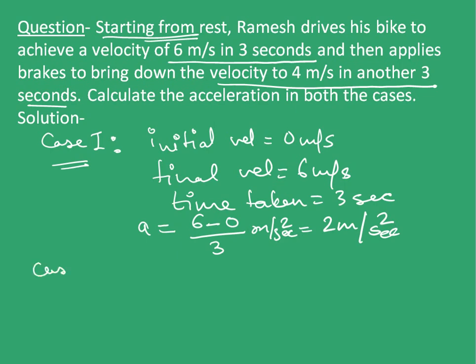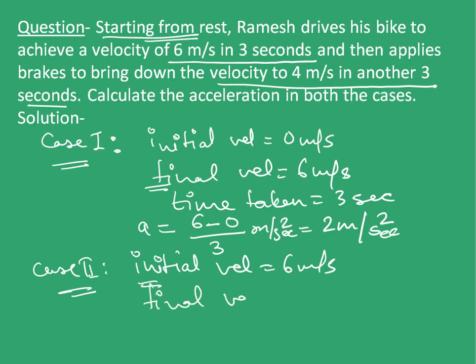In case 2, his velocity initially is 6 meters per second because the final velocity that he achieved in case 1 will be his initial velocity in case 2. Here, the final velocity is 4 meters per second because he brings down the velocity to 4 meters per second, and the time taken is 3 seconds.